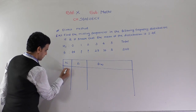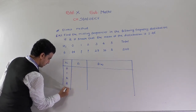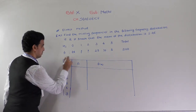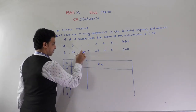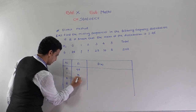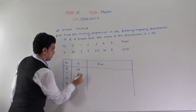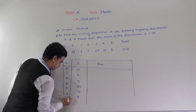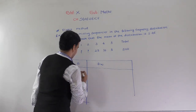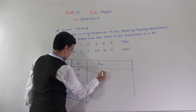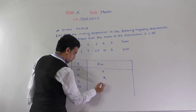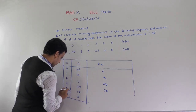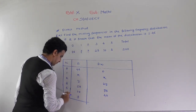So xi is: 0, 1, 2, 3, 4, 5. Fi is: 46, x, y, 25, 10, and 5. Now fixi: 0 into 46 is 0, 1 into x is x, 2 into y is 2y, 3 into 25 is 75, 4 into 10 is 40, and 5 into 5 is 25.